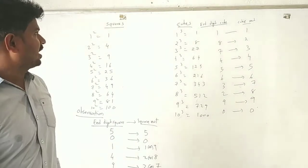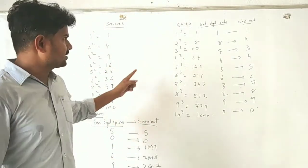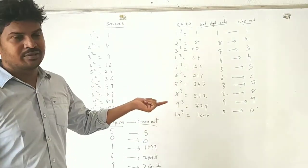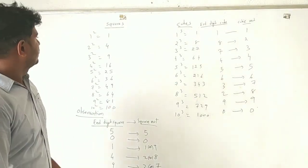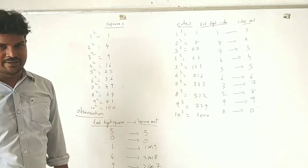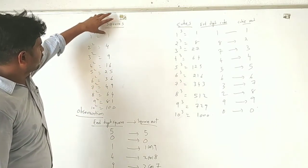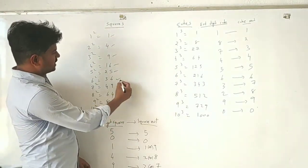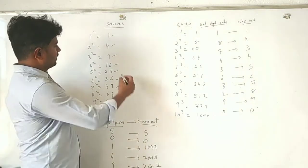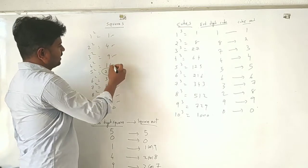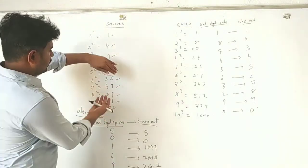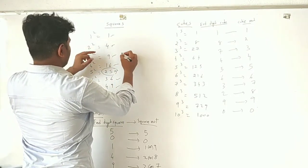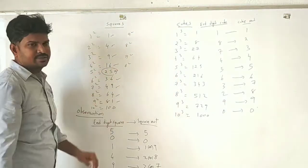Let's observe the first 10 squares and first 10 cubes. If you observe the unit digits of the squares carefully: 1 squared is 1, 2 squared ends in 4, 3 in 9, 4 in 6, 5 in 5, and then it reverses: 6 in 6, 7 in 9, 8 in 4, 9 in 1. So 5 is in the middle, and 4 and 6 are symmetric, as are 3 and 7, 2 and 8, 1 and 9.